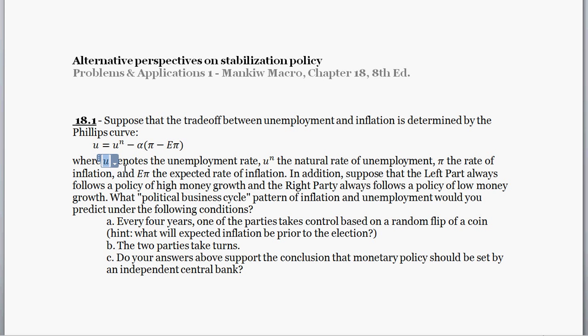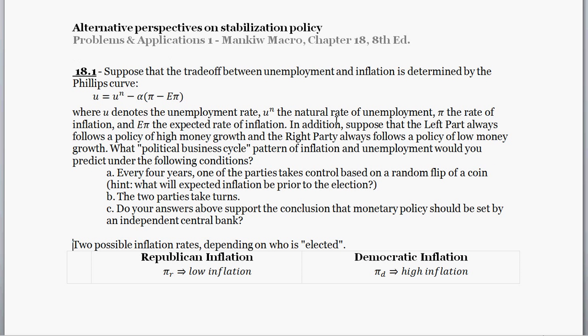Here, u denotes the unemployment rate, u-to-the-n designates the natural rate of unemployment, pi is the inflation rate, and e-pi is the expected rate of inflation. In addition, suppose that the left party follows a policy of high money growth and the right party follows a policy of low money growth.